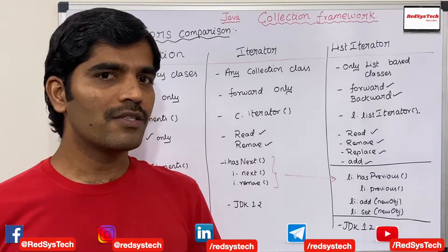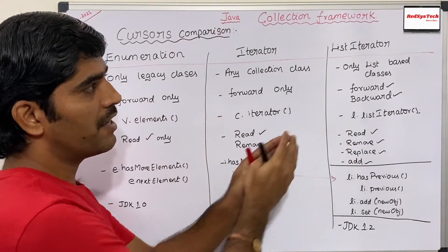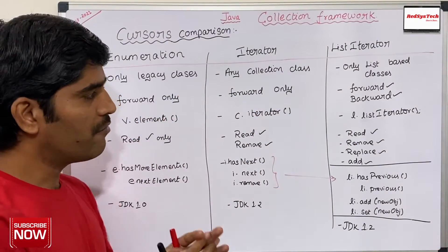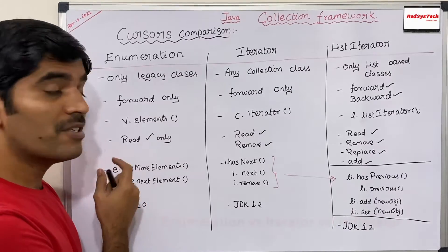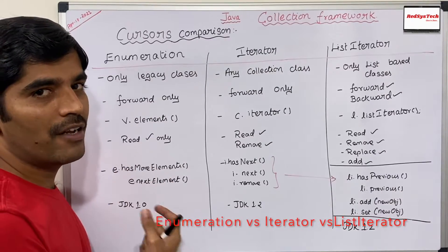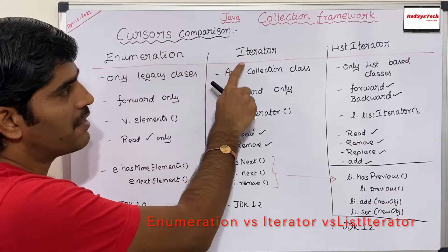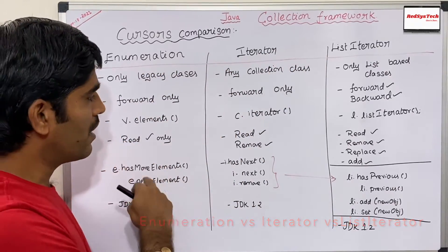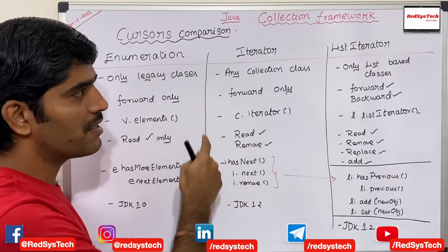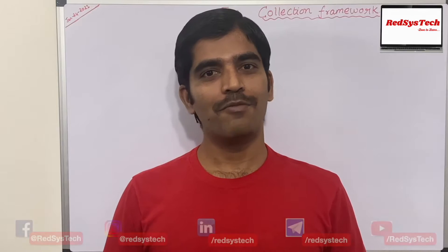As we know, Enumeration, Iterator, and ListIterator are all interfaces. If you see here, I am saying we are able to create an object reference — so how can we create an object reference? The classes which are actually implementing these interfaces, we are going to look into that in the next video. I hope you guys have understood the concept very clearly.